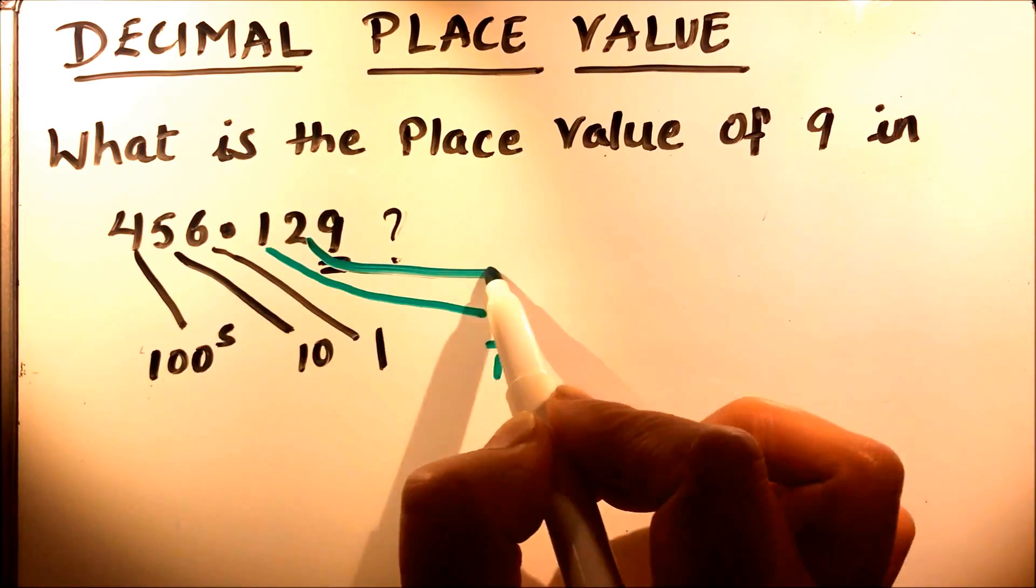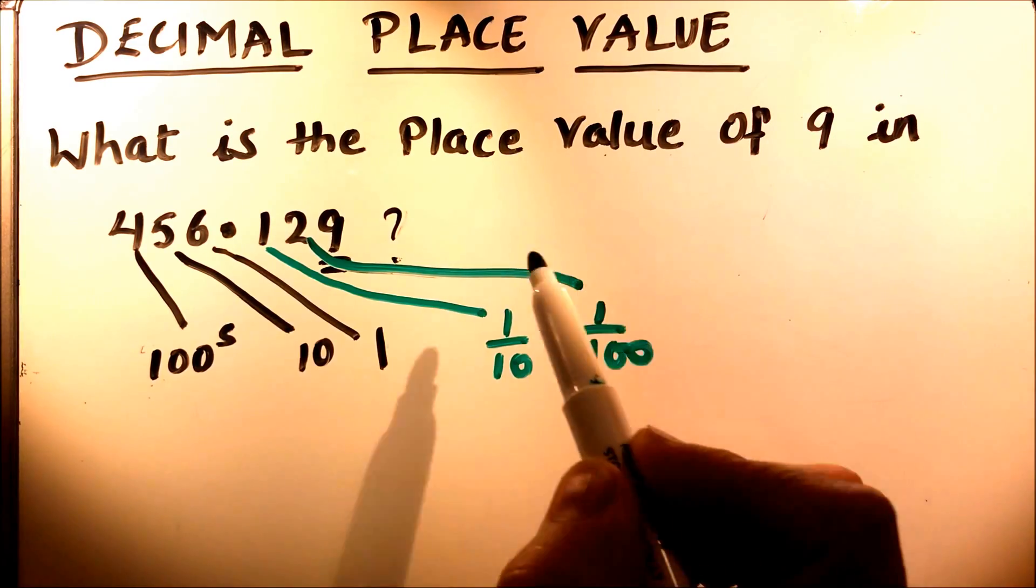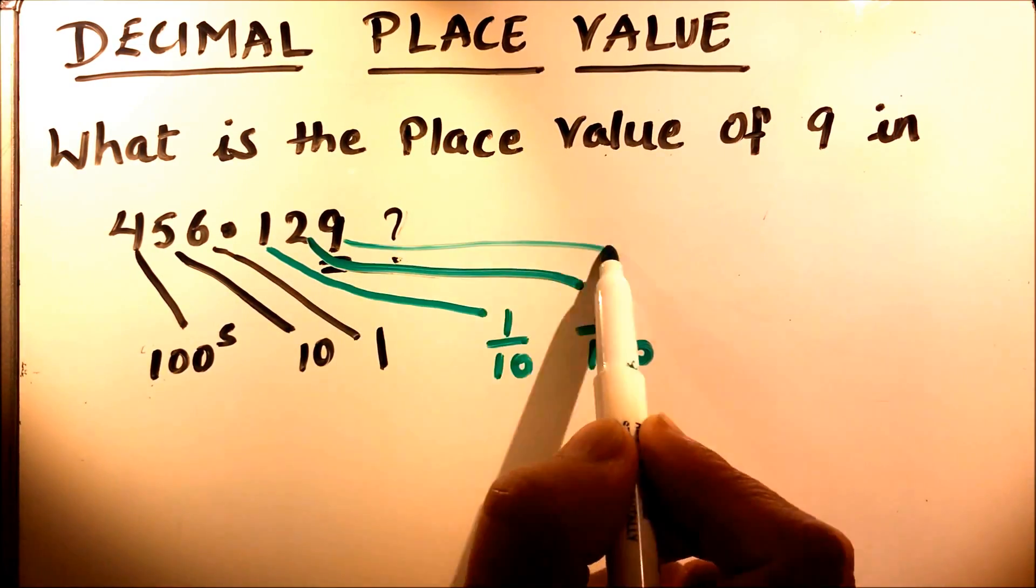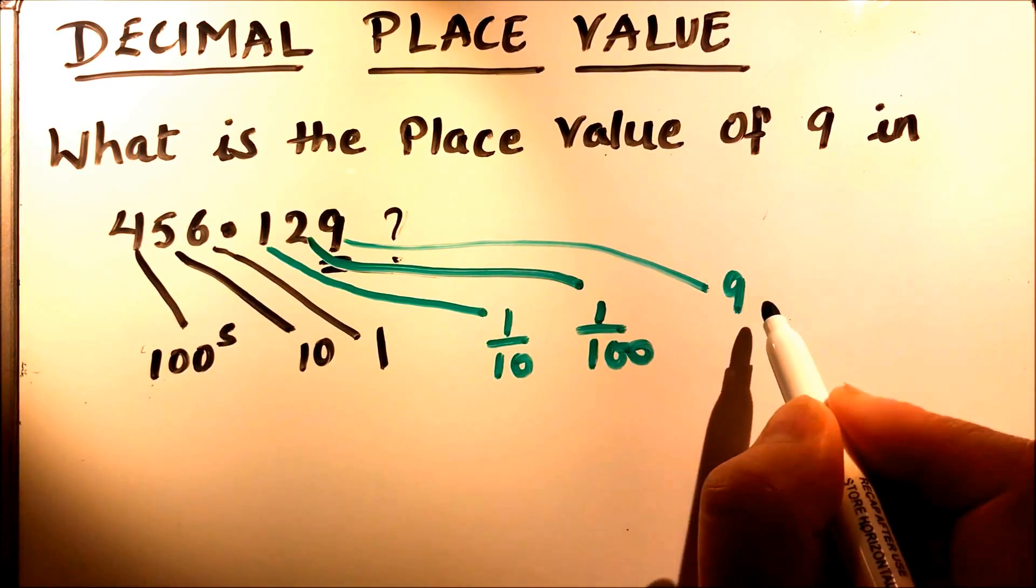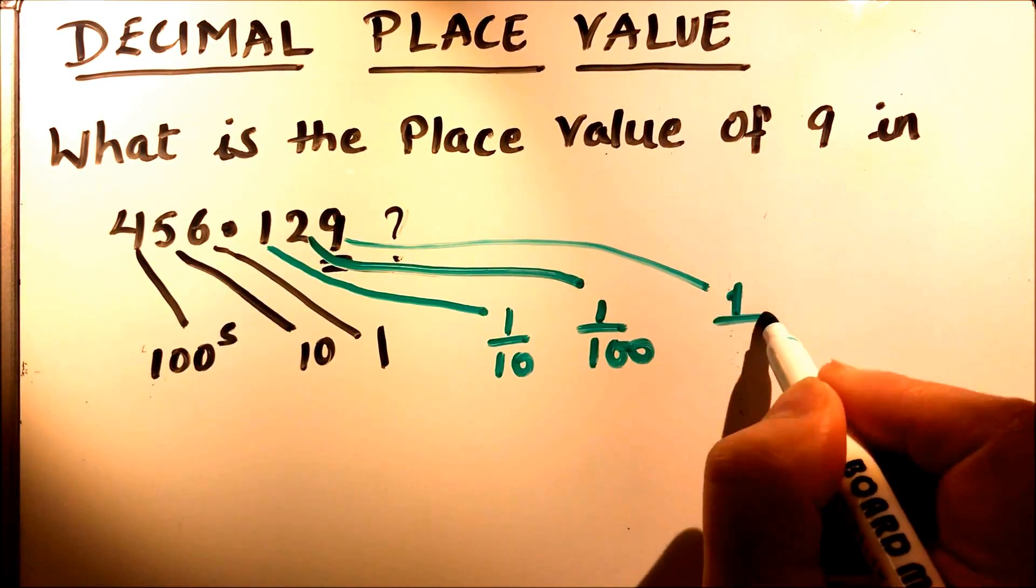The place value of 2 is one hundredths, that is two hundredths because it is in the hundredths place, and the place value of 9 will be the thousandths place. So this is in the thousandths place.